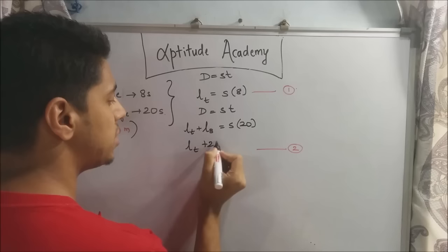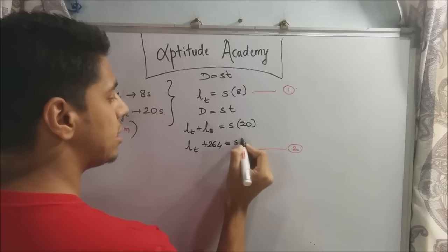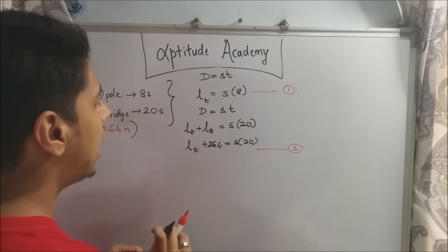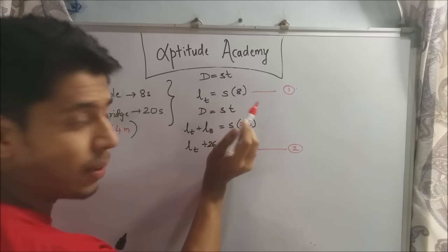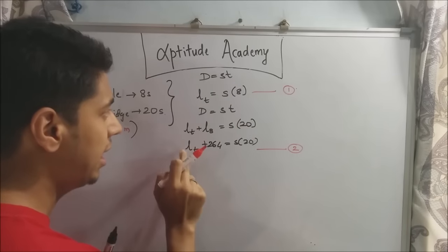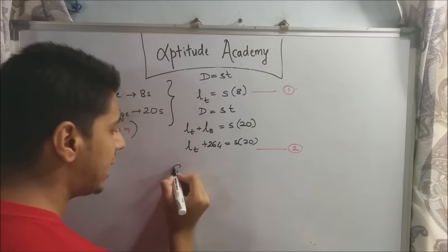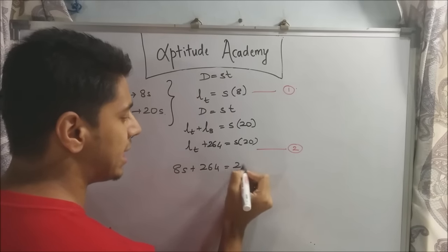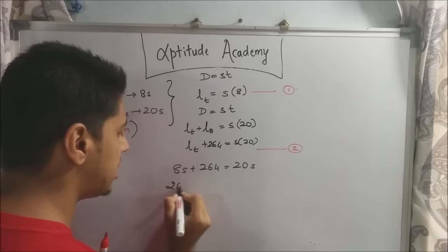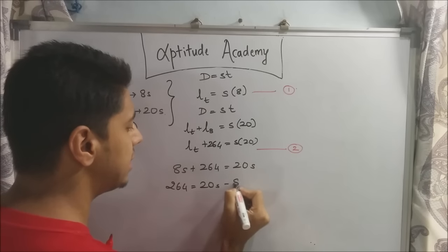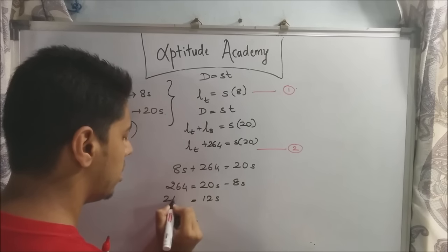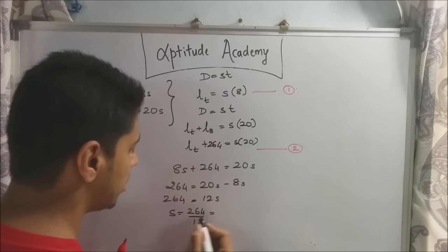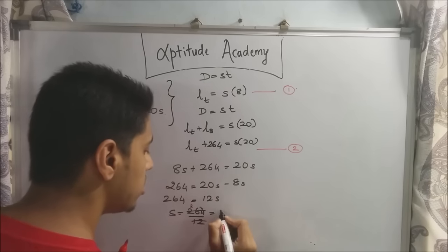Lt plus 264 equals s into 20. Now we've got two equations with two unknowns. So we can solve it. Also, you can see this now. Lt equals s into 8 or 8s. So we'll substitute the value of Lt here. So now what we can write is 8s plus 264 equals 20s. Just take it on that side. So 264 equals 20s minus 8s which equals 12s. So the speed is 264 by 12. So this is 22.